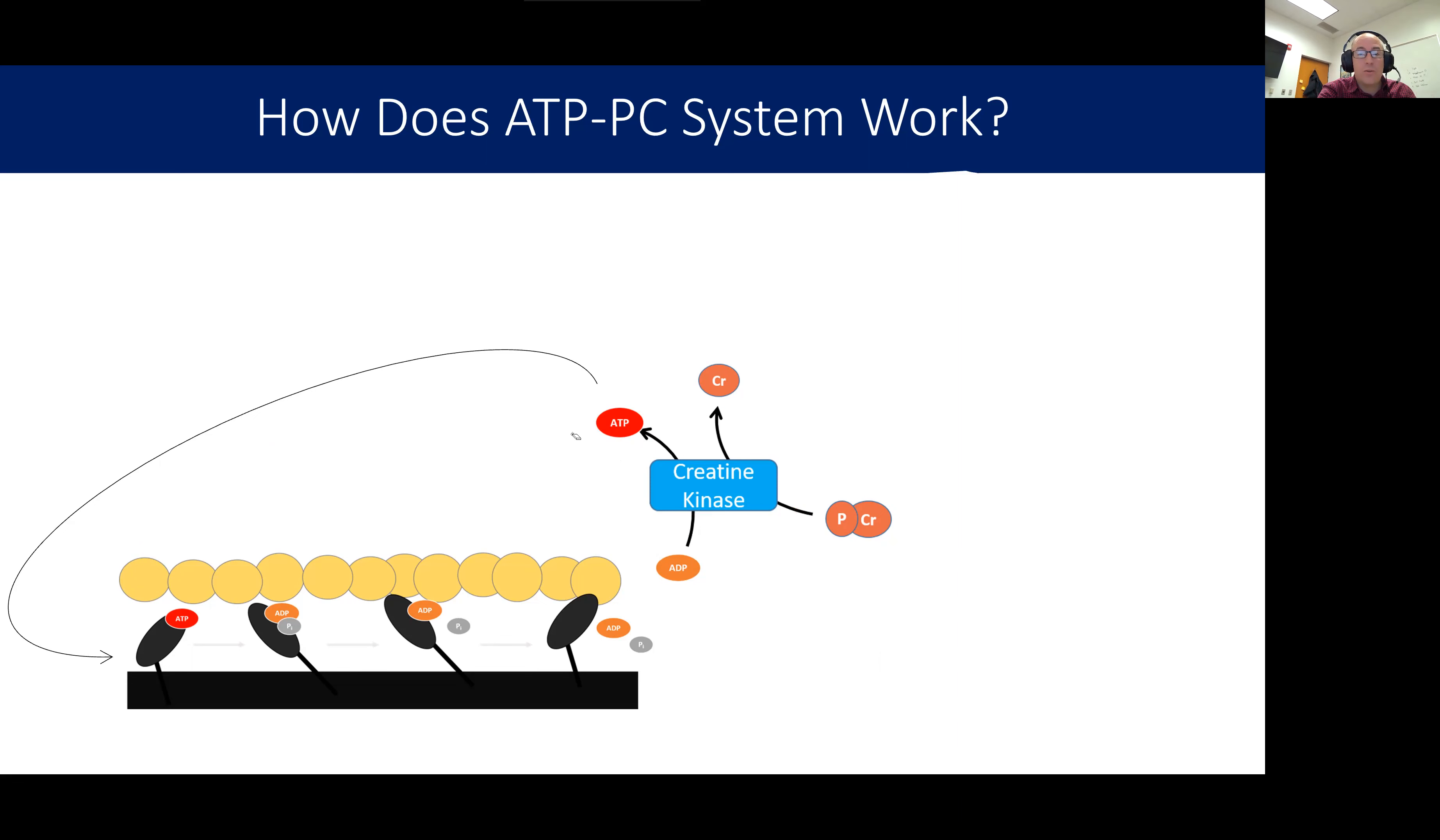It gets exhausted really quickly. Another issue with the phosphocreatine and the adenosine kinase system is that they create a lot of basically pollution for the muscle. It causes some unfavorable conditions for the muscle that will cause peripheral fatigue. So we can't rely on these all that much.